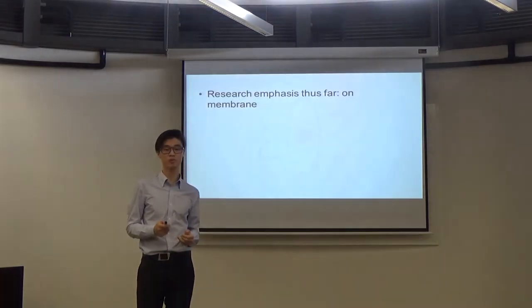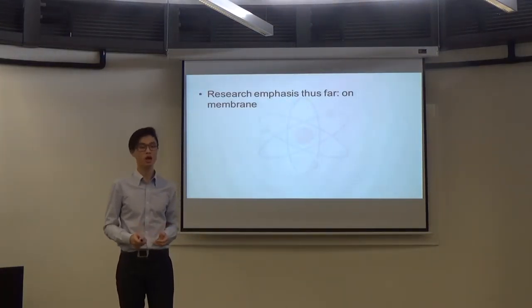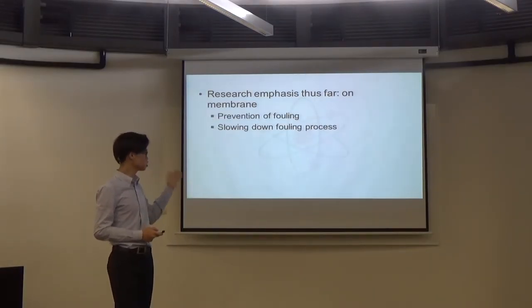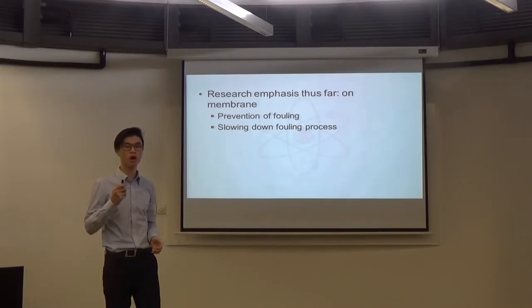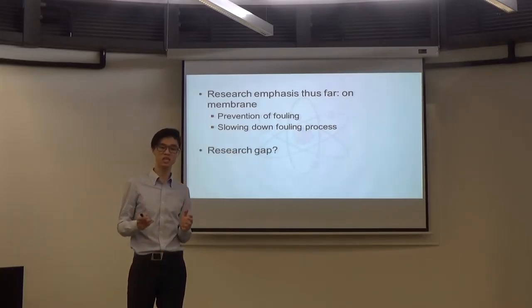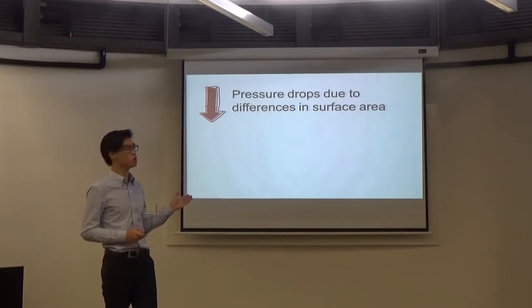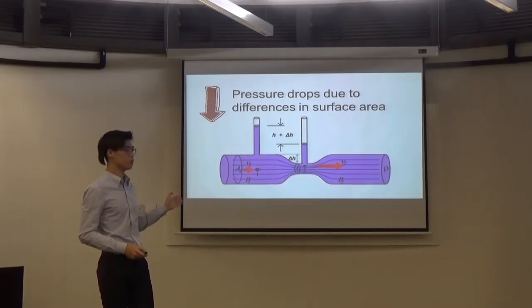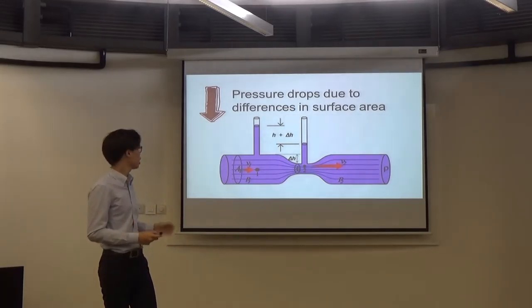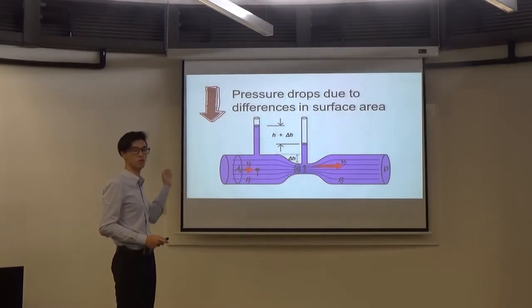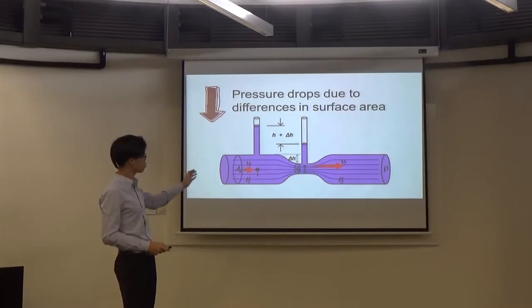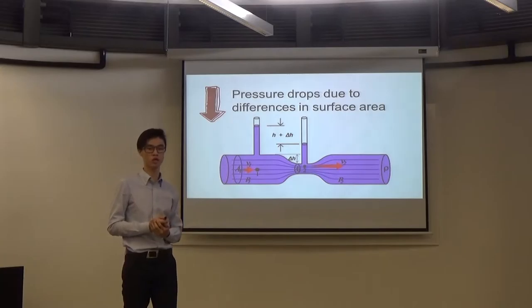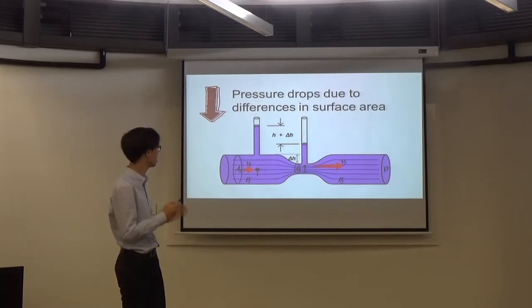Much research has been done regarding membranes, more specifically on the prevention of fouling as well as the slowing down of the fouling process. However, much less emphasis has been given to pressure drops due to differences in surface area. This is what we learned in the Bernoulli's equation — a change in surface area would lead to a change in pressure. As the fluid flows from point one to point two, it reduces the fluid pressure, and this effect is termed the Venturi effect.